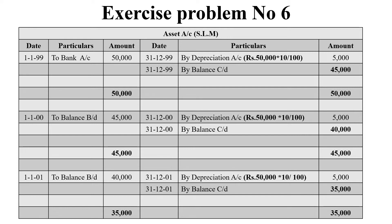Again, the depreciation is 5,000. The balance figure is 40,000, and it is transferred to the third year, that is 1st January 2001. Again, depreciation of 5,000 is reduced, and we get a balancing figure of 35,000. That is the value of the asset as on 31st December 2001, the third year — under straight line method.